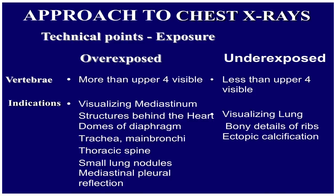When seeing the X-ray, assess whether it is overexposed, normally exposed, or underexposed. In a normally exposed film, the upper four intervertebral spaces are usually visible; in overexposed films, all four vertebrae may be visible. Overexposed films may be indicated when you want to visualize mediastinal structures behind the heart, domes of the diaphragm, trachea, main bronchi, thoracic spine, small lung nodules, and mediastinal and pleural reflections. Usually an adequately exposed film is what you should comment upon.